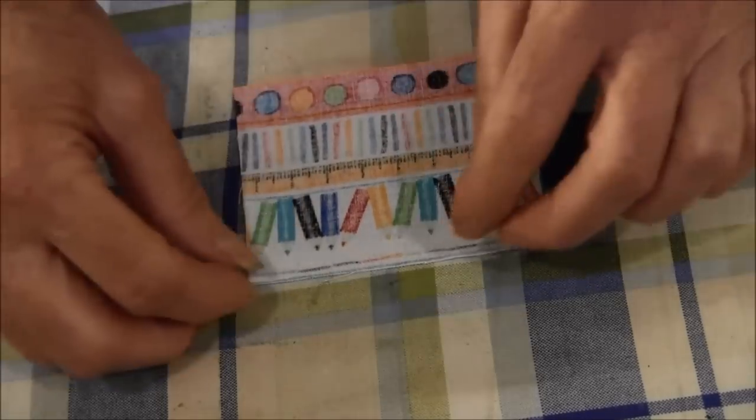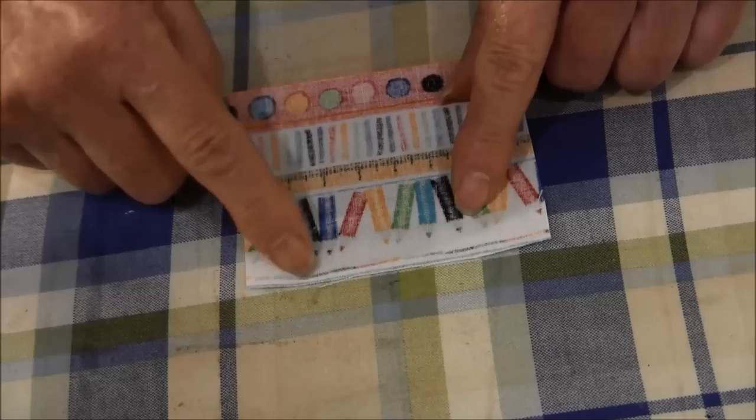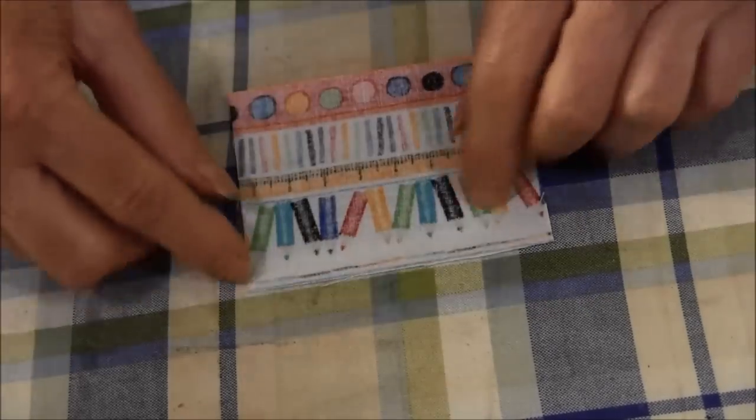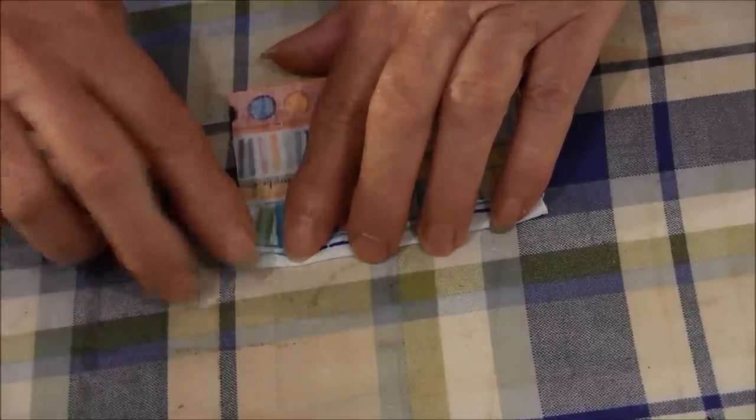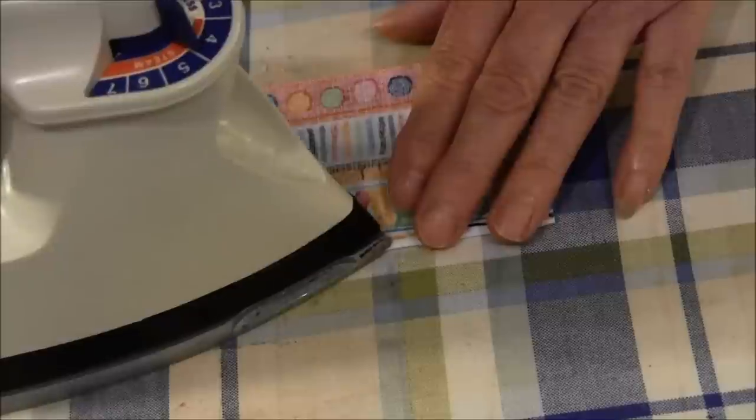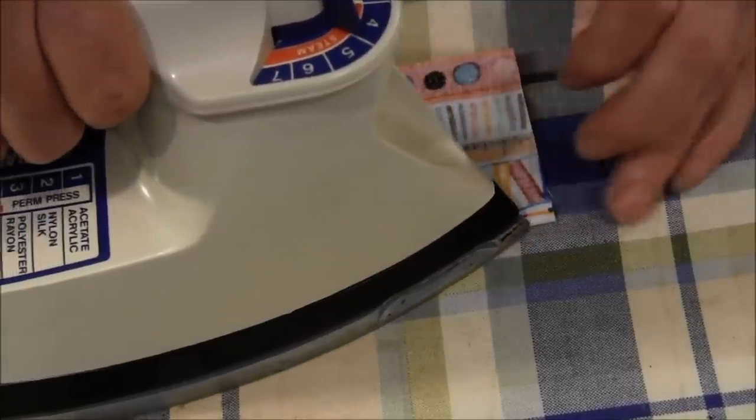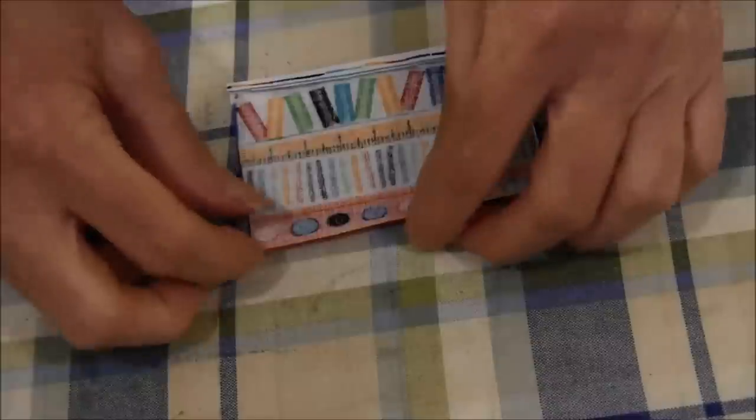The first thing we're going to do is turn the 3 and a half inch side down a quarter of an inch and press it. We're going to do the same on the other side.